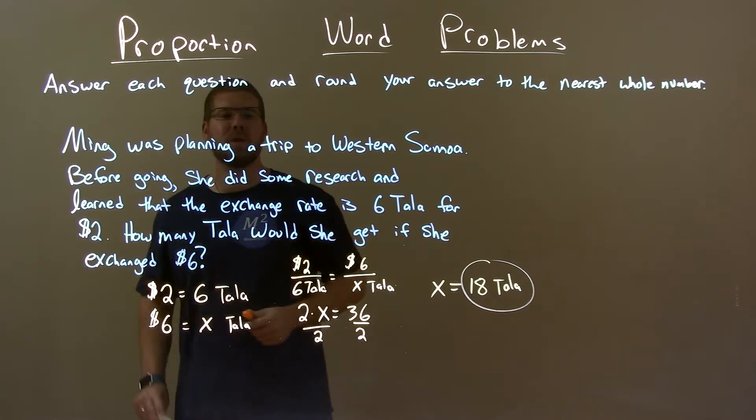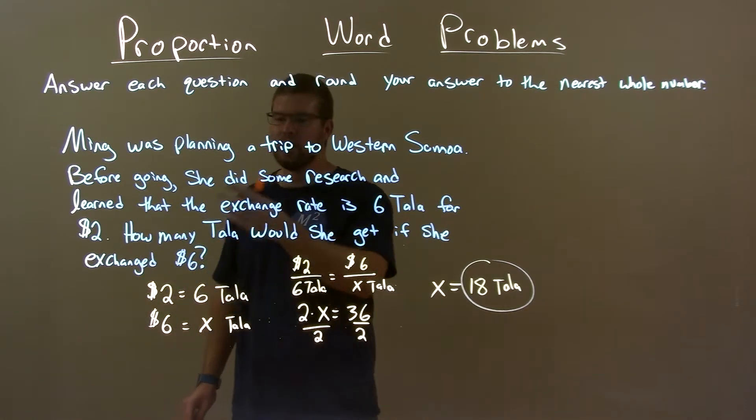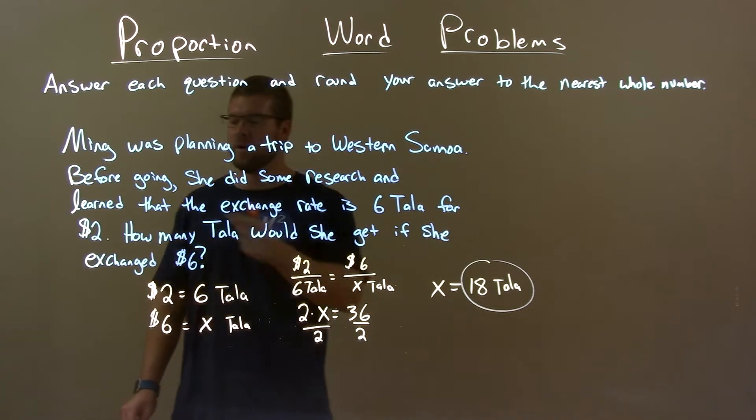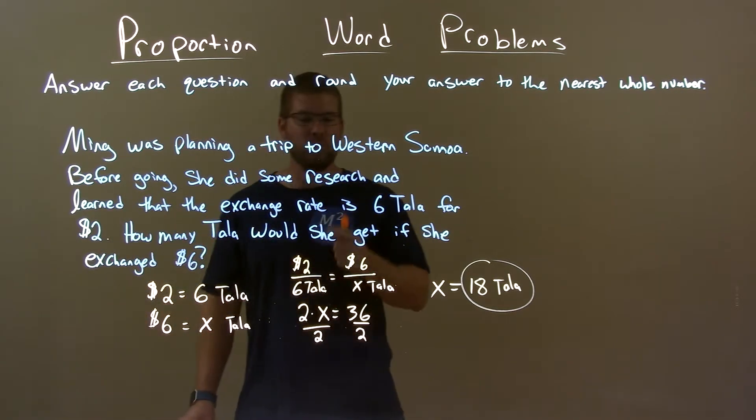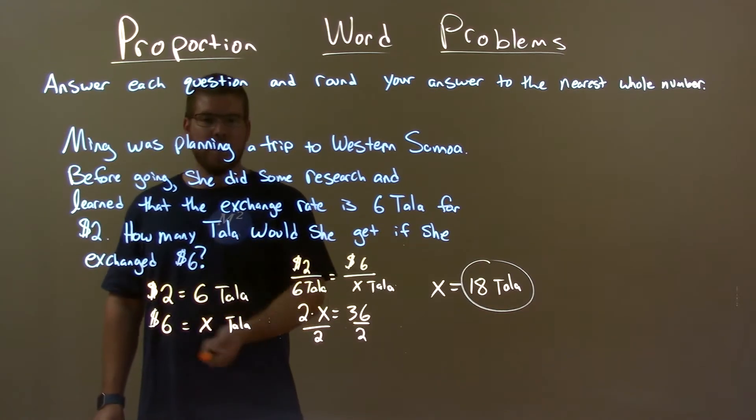Quick recap, we're given Ming was planning a trip to Western Samoa. Before going, she did some research and learned that the exchange rate is six tala for two dollars. How many tala would she get if she exchanged six dollars? Well, we set up a proportion.